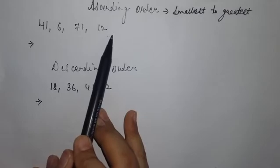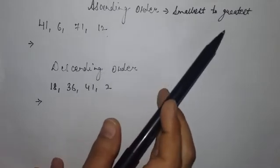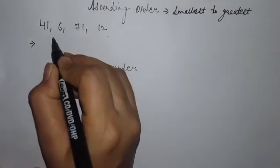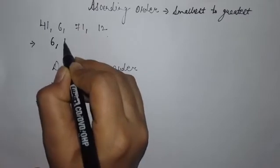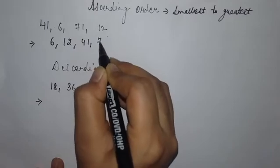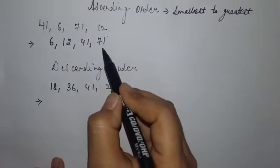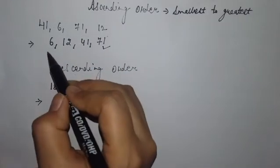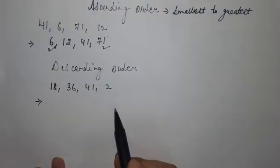You have to arrange these numbers in ascending order means from smallest to greatest. So, smallest number is 6, then we'll write 12, then we'll write 41, and then in the last 71. So, 71 is the greatest number and 6 is the smallest number.